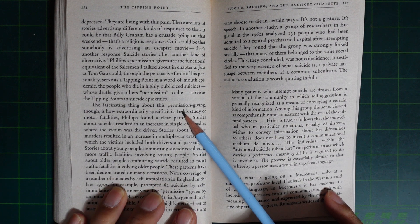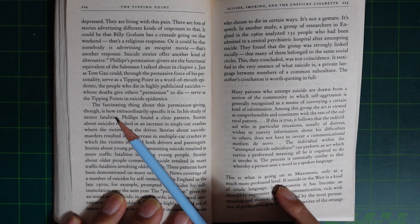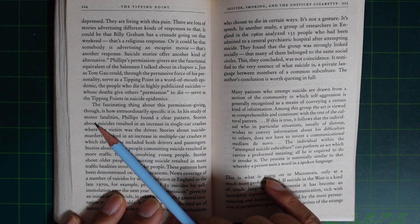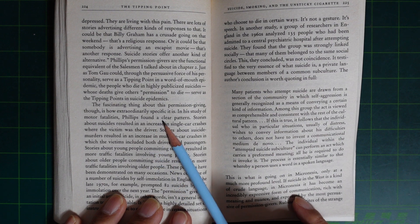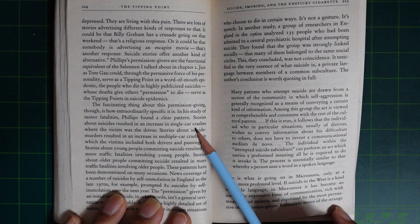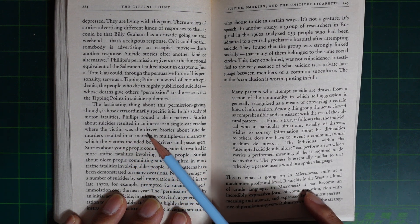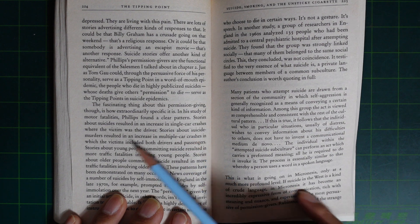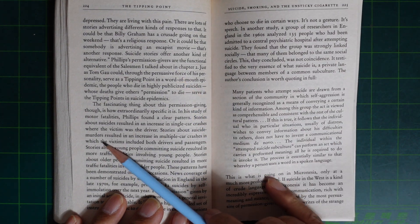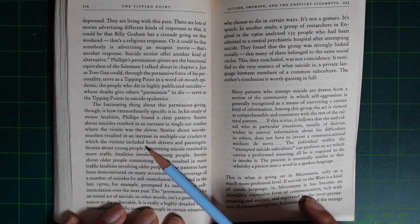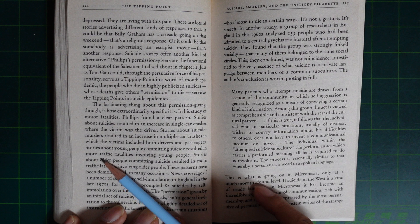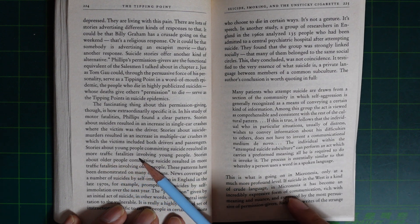The fascinating thing about this permission giving, though, is how extraordinarily specific it is. In his study of motor fatalities, Phillips found a clear pattern. Stories about suicide result in an increase of single-car crashes where the victim was the driver. Stories about suicide-murder result in an increase of multiple-car crashes in which the victims included both drivers and passengers.